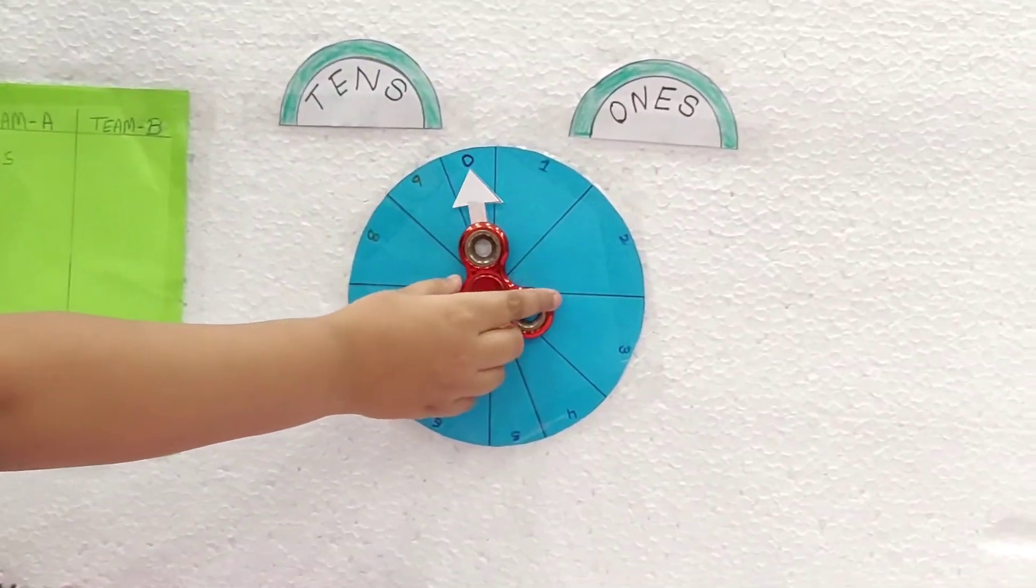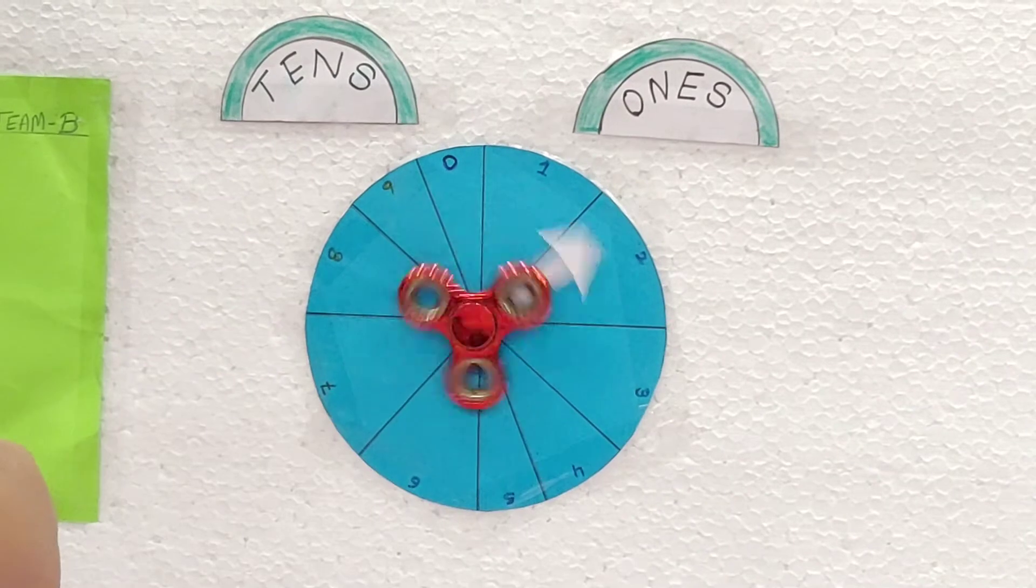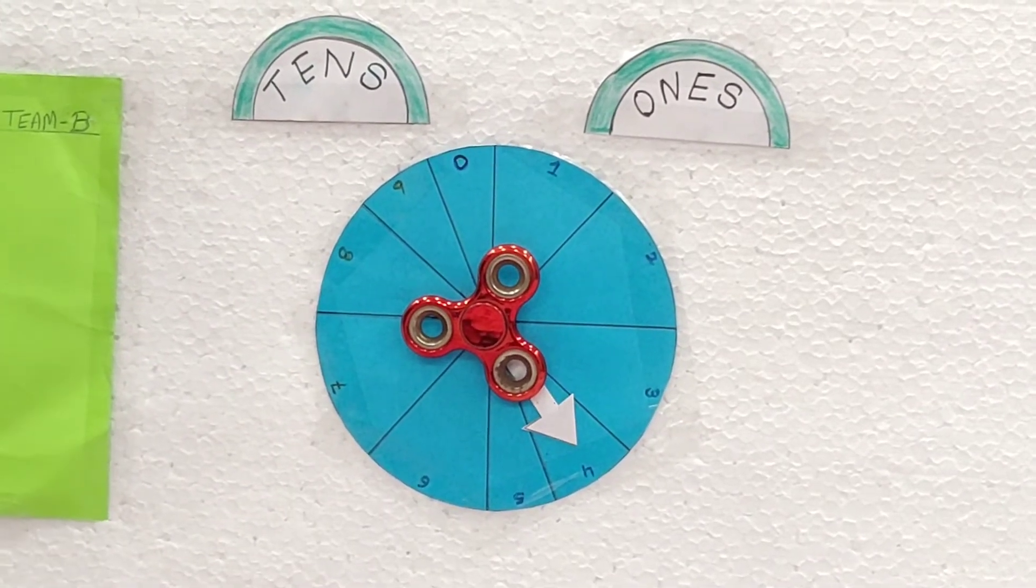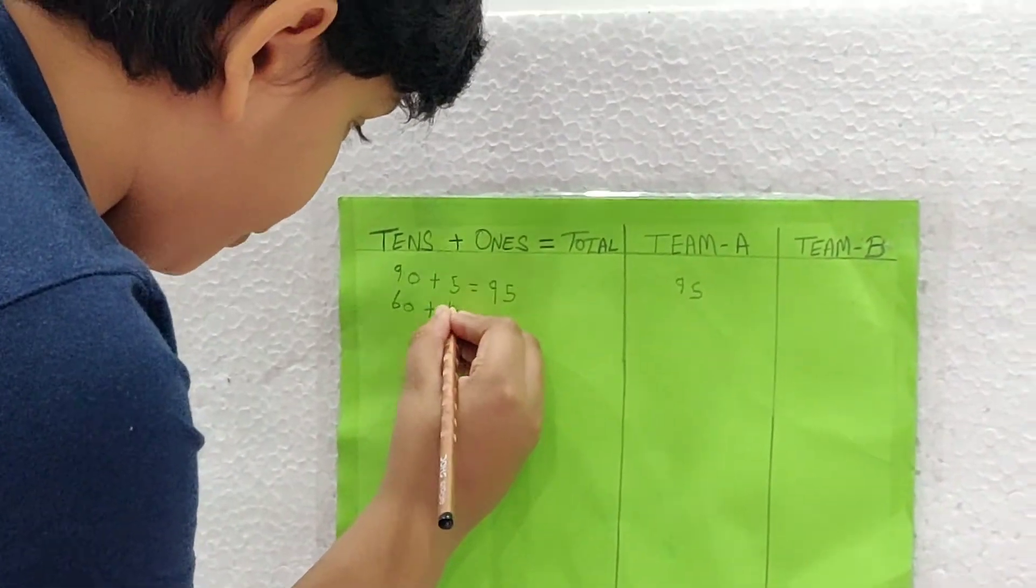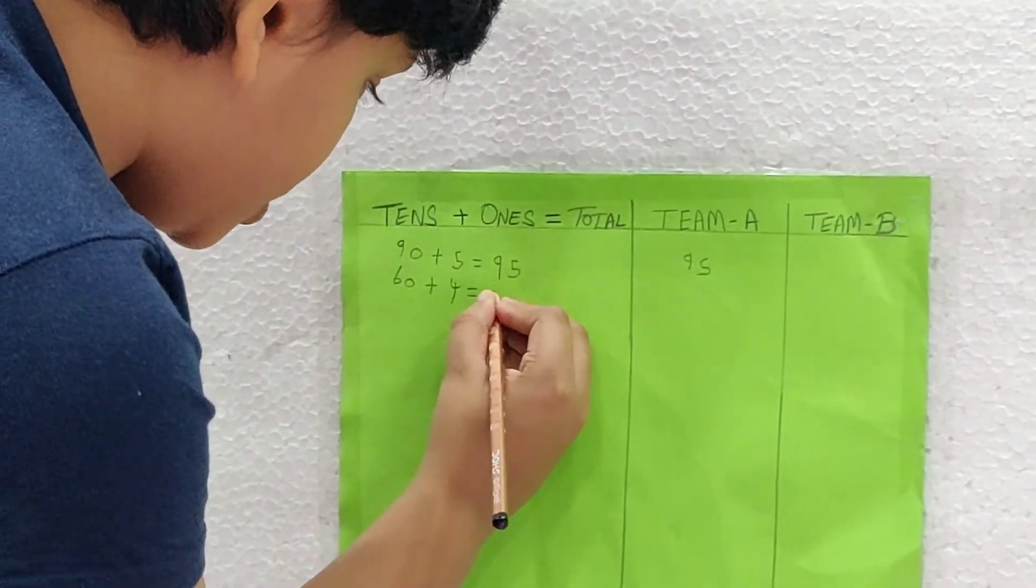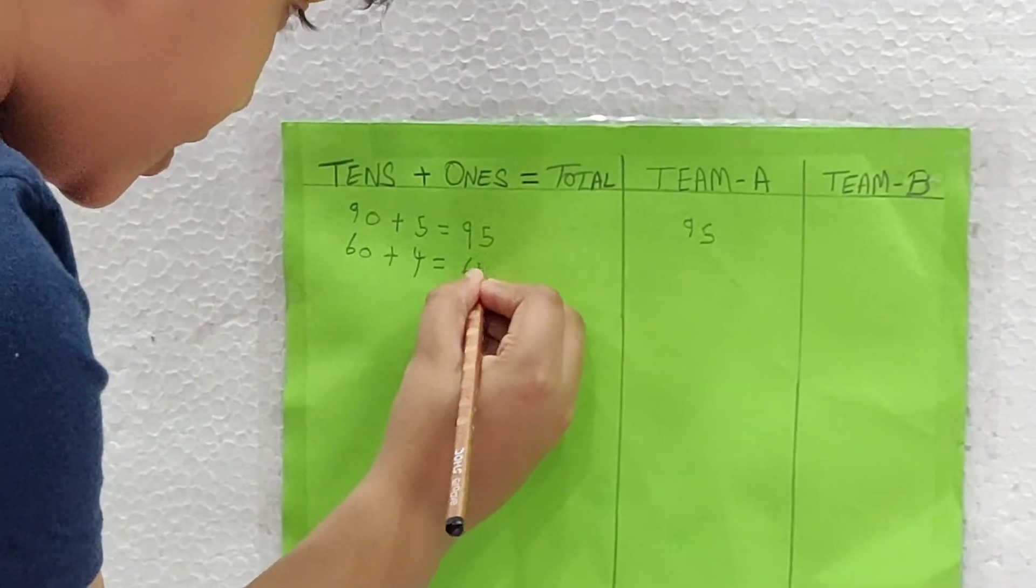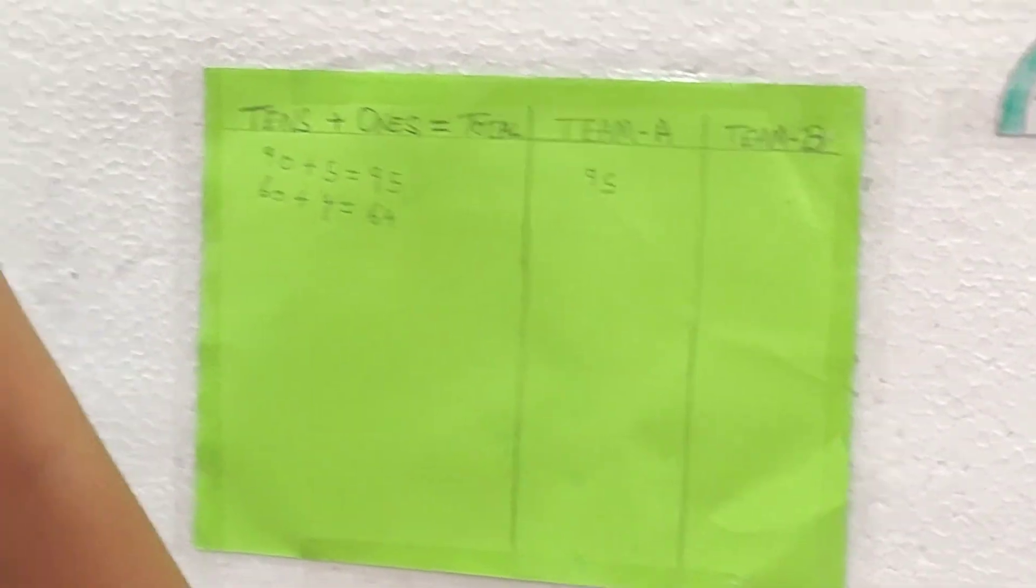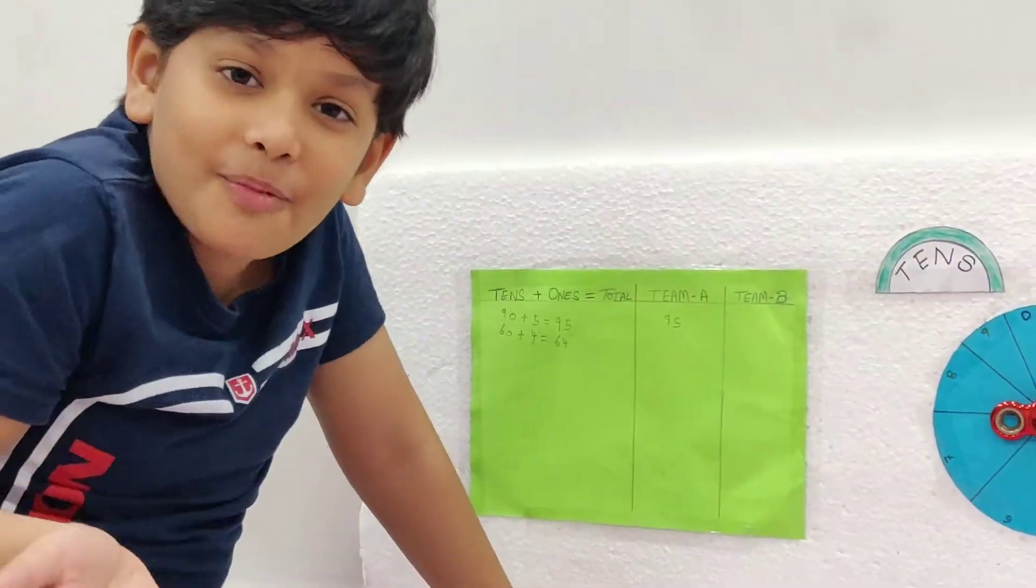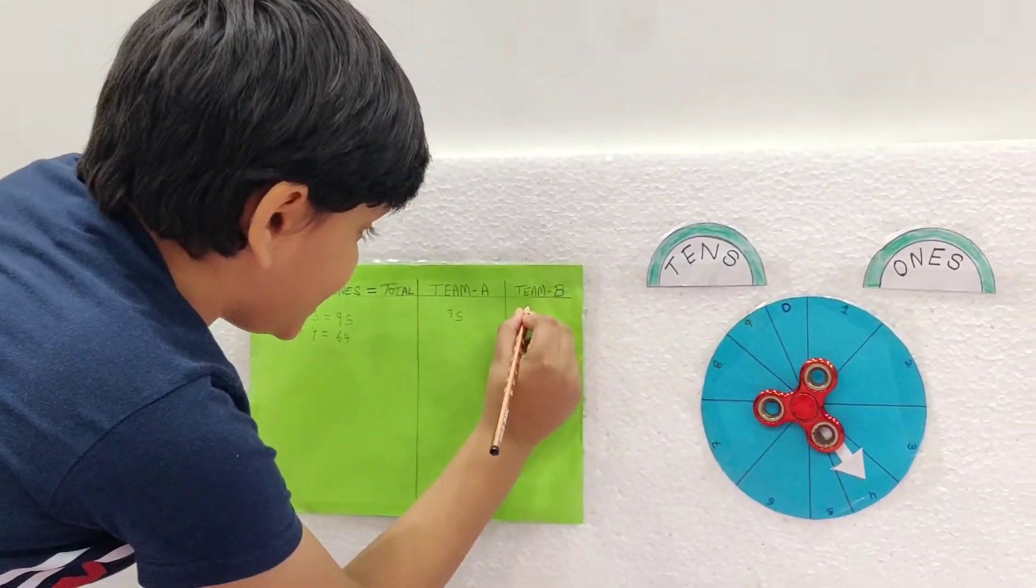Then we will spin the wheel again. We got 4. So 60 plus 4 is equal to 64.